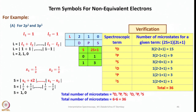For non-equivalent electrons, consider 2P1 and 3P1. Here L1 equals 1 and L2 equals 1, so L ranges from L1 plus L2 to |L1 minus L2|, giving L equals 2, 1, 0 — corresponding to D, P, S. Similarly, S1 equals 1/2 and S2 equals 1/2, so S equals 1 and 0, giving 2S+1 values of 3 and 1. The resulting spectroscopic terms are 3D (15 microstates), 3P (9), 3S (3), 1D (5), 1P (3), and 1S (1), totaling 36 microstates.